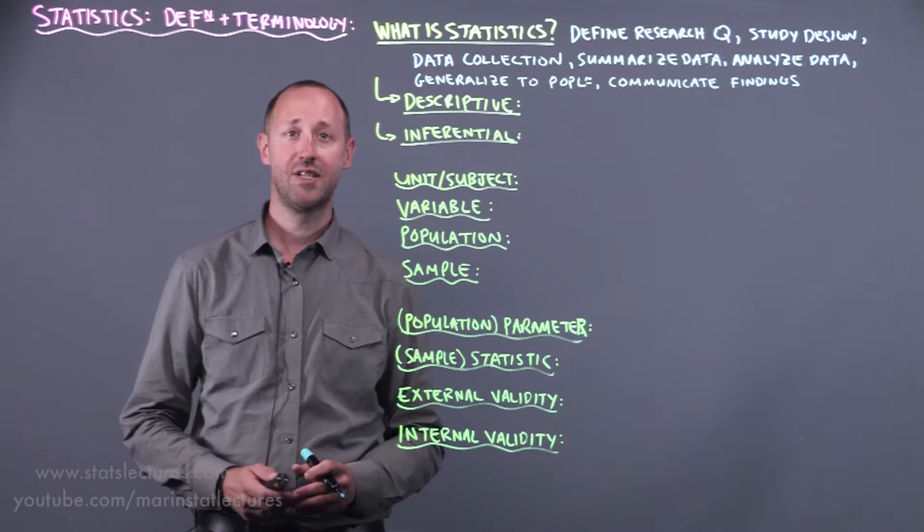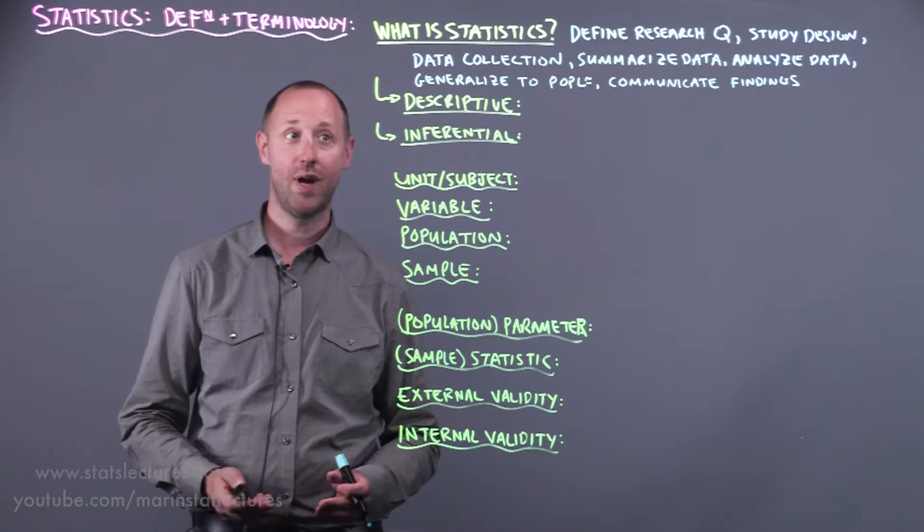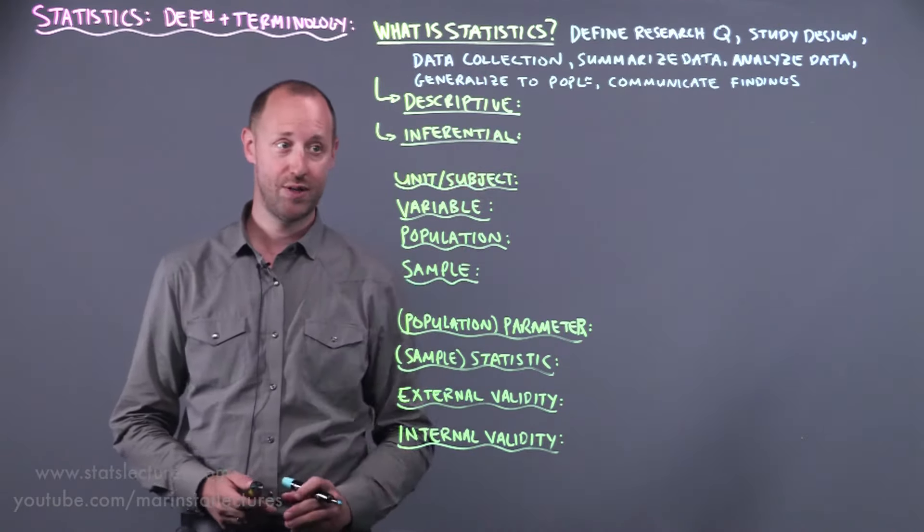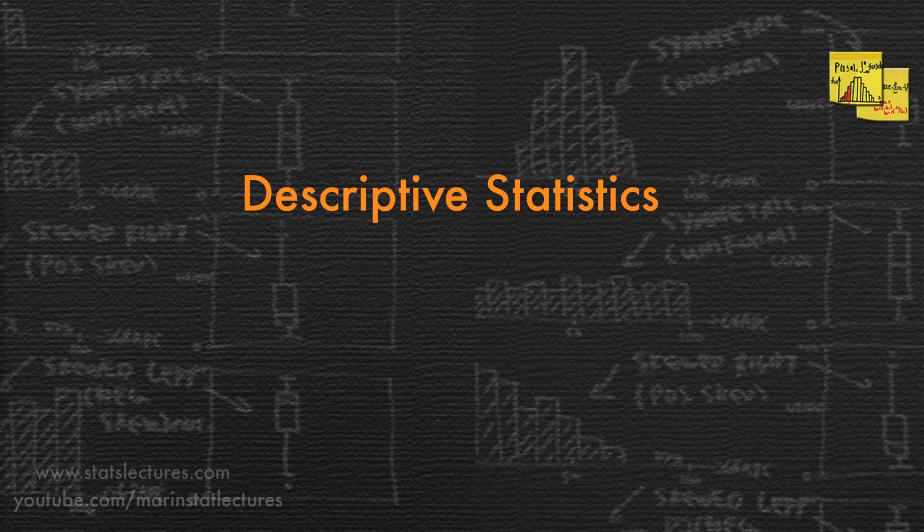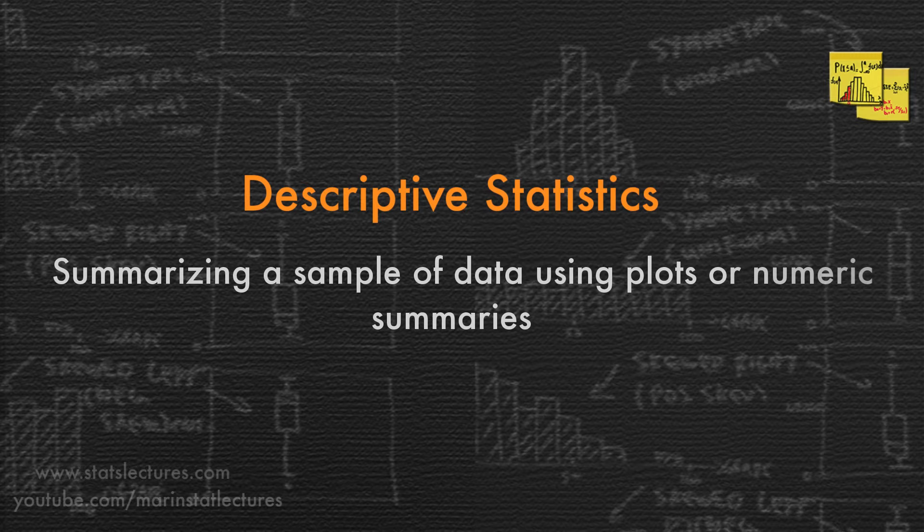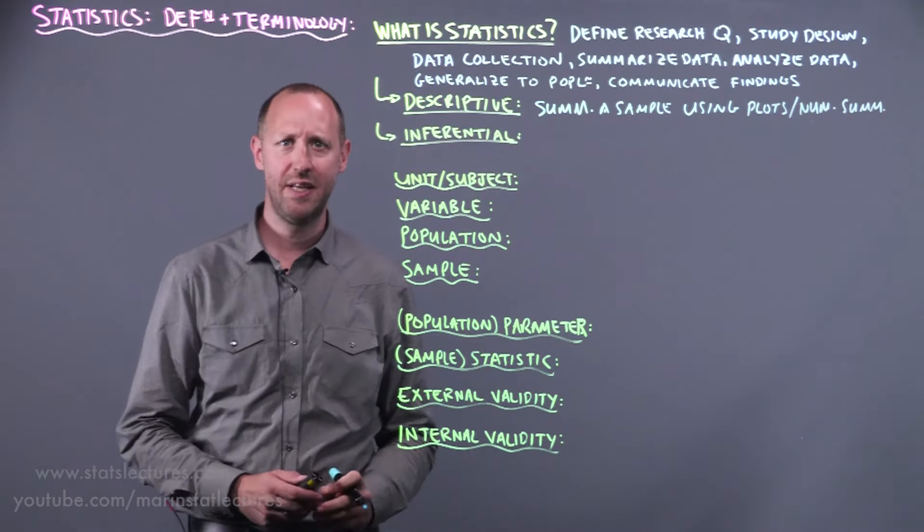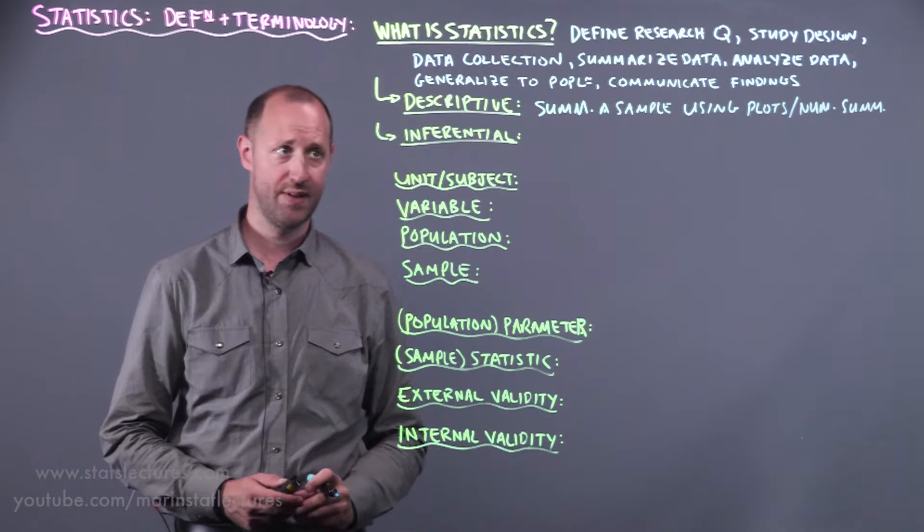So statistics can generally be broken down into two categories: descriptive and inferential. Descriptive is what a lot of people think of when they first think of statistics or a statistic. This is where we summarize a sample of data using plots or numeric summaries, so different plots, means, median, standard deviations, these sorts of things.